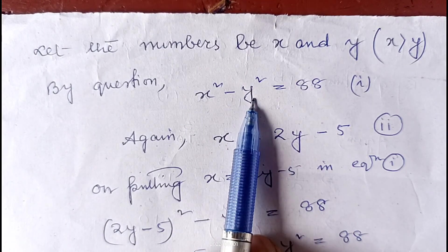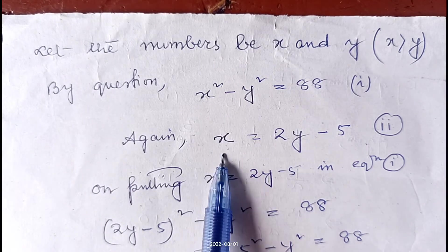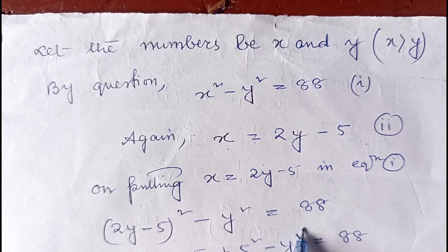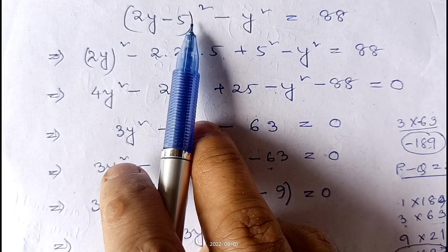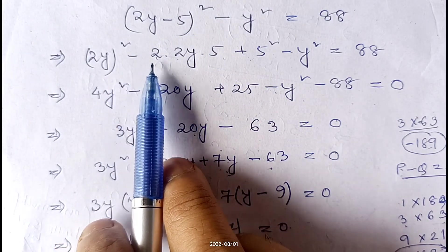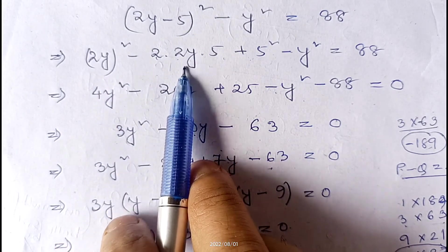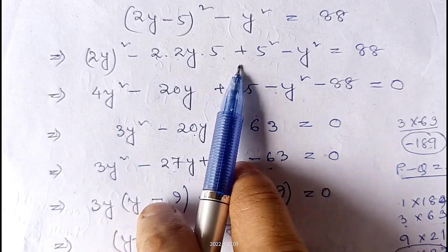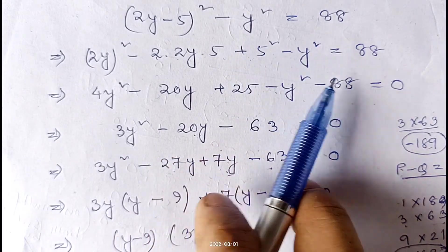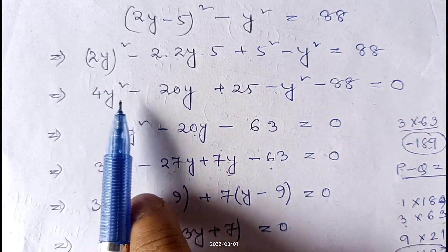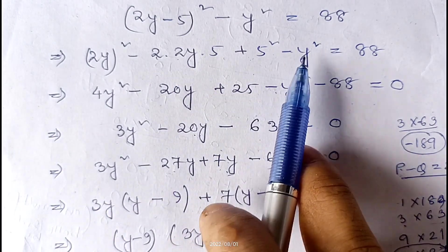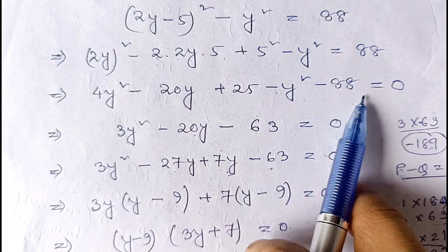Substituting x = (2y − 5) into equation one: (2y − 5)² − y² = 88. Applying the (a − b)² formula, where a = 2y and b = 5: a² − 2ab + b² − y² = 88. This becomes 4y² − 20y + 25 − y² = 88, which simplifies to 4y² − y² − 20y + 25 − 88 = 0.